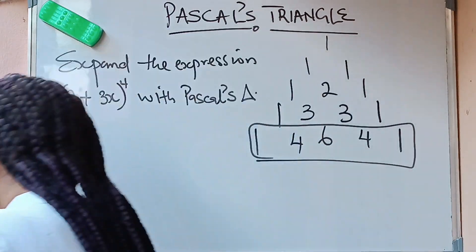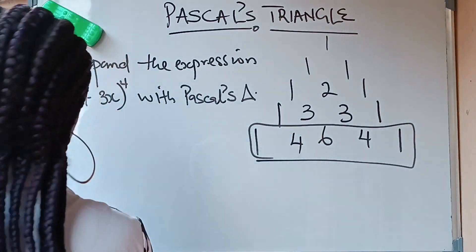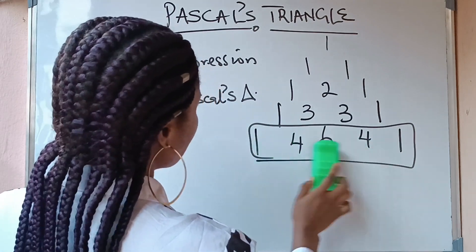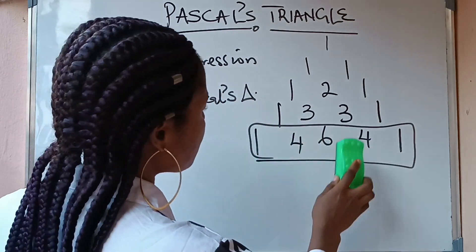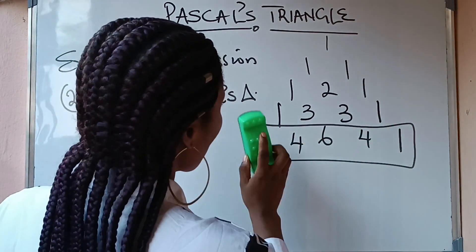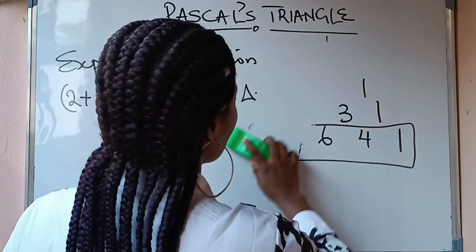Having gotten that, we are going to write out the row we need: 1, 4, 6, 4, 1. These will be our coefficients.